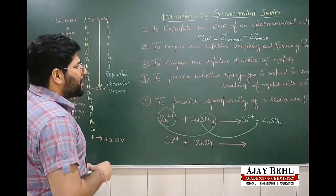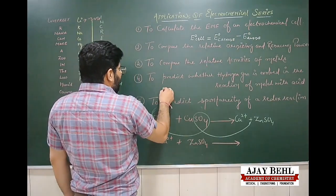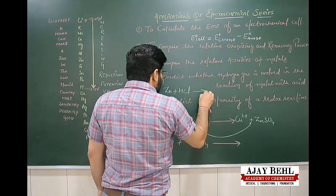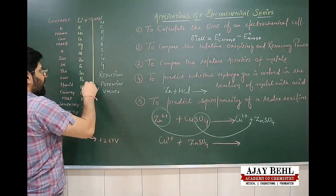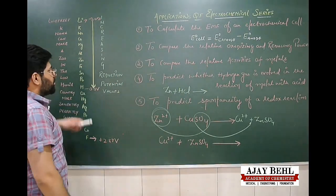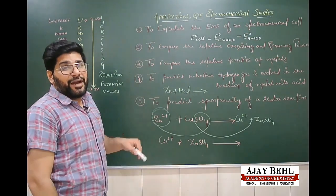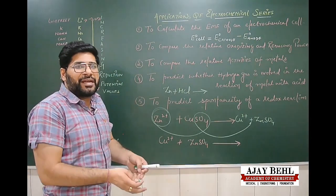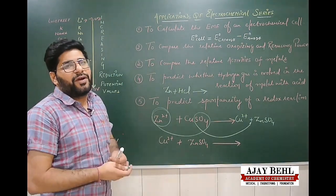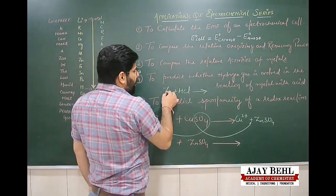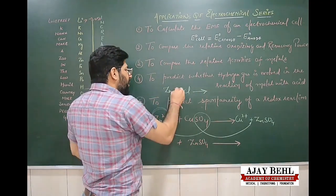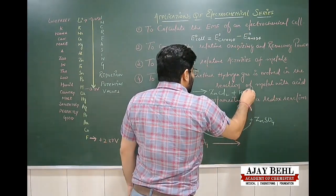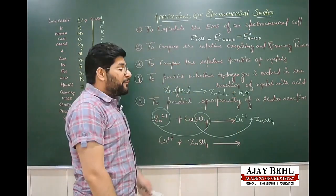For example, when zinc reacts with HCl: zinc appears above hydrogen in the series, so zinc has a higher oxidation potential than hydrogen. Therefore, zinc will react with HCl to produce ZnCl₂ plus H₂ — hydrogen gas will be evolved.